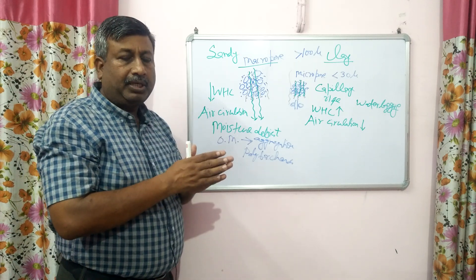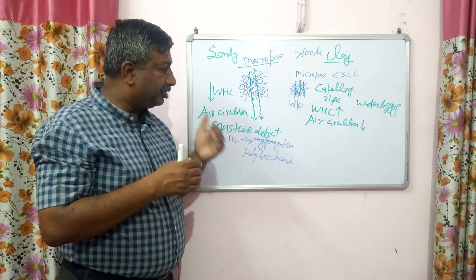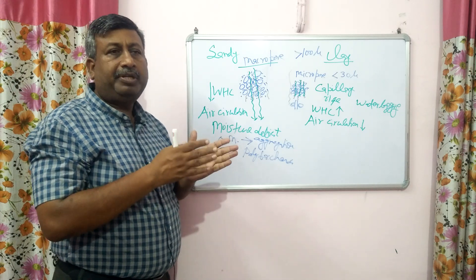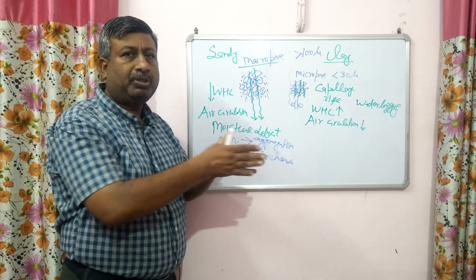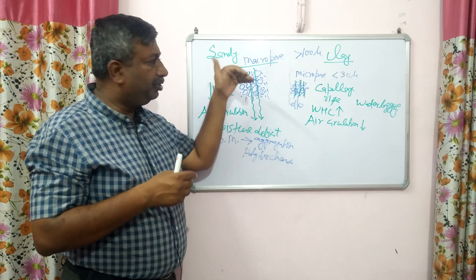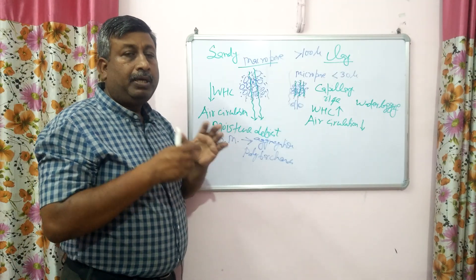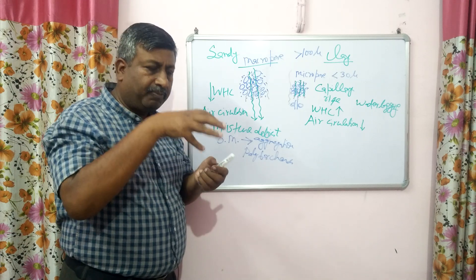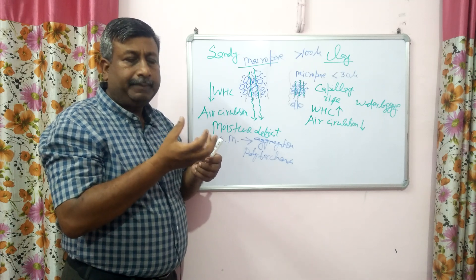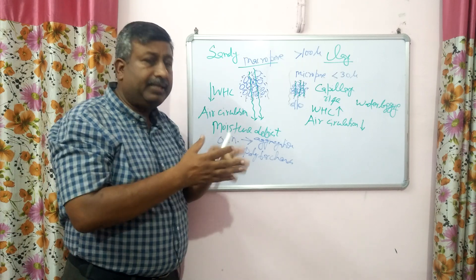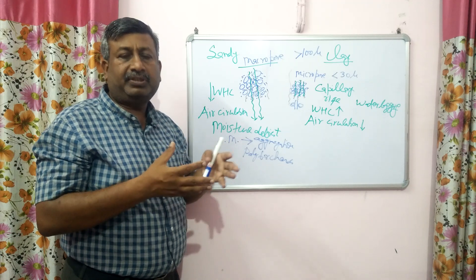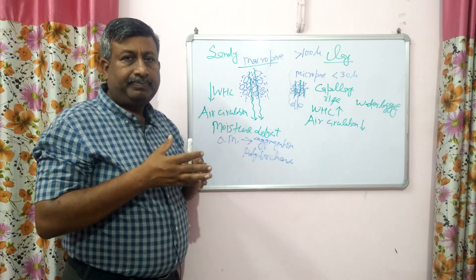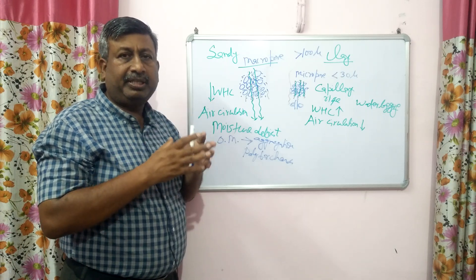In an organic-rich field, moisture availability is for a longer period and moisture deficit conditions come very late compared to soils with very low organic matter. This is the reason that addition of organic matter is highly beneficial in rainfed areas, where moisture retention directly improves plant growth and reduces the chance of moisture deficit.